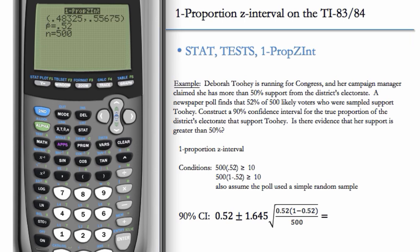And we get our confidence interval. So this looks like 0.483 to 0.557. In this case, we're 90% confident that Toohey's true support lies between 48.3% and 55.7%. Is there evidence that her support is greater than 50%?